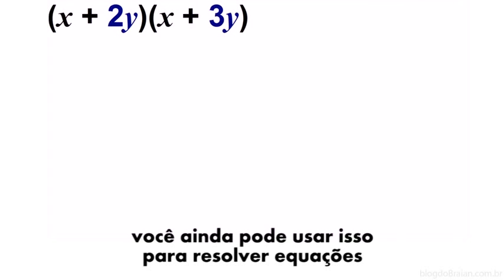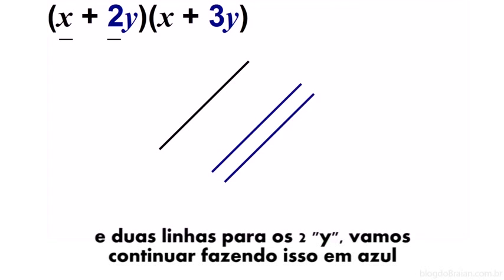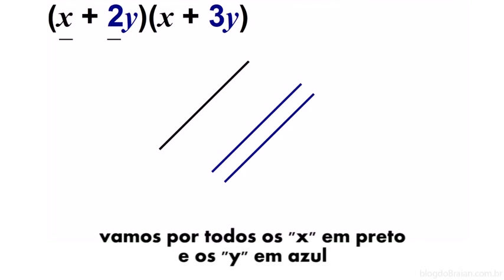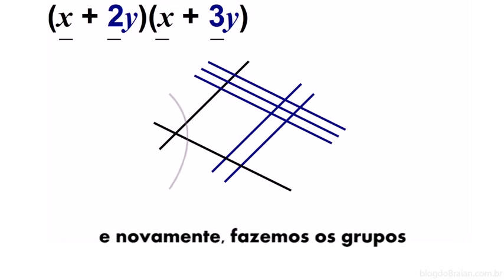You can even use it for algebraic equations. We'll draw one line for the x. And we'll draw two lines for the 2y, and we'll keep it in blue. We'll put all the x's in black and the y's in blue. The other number, we draw the lines in the other direction. And again, we make groupings.